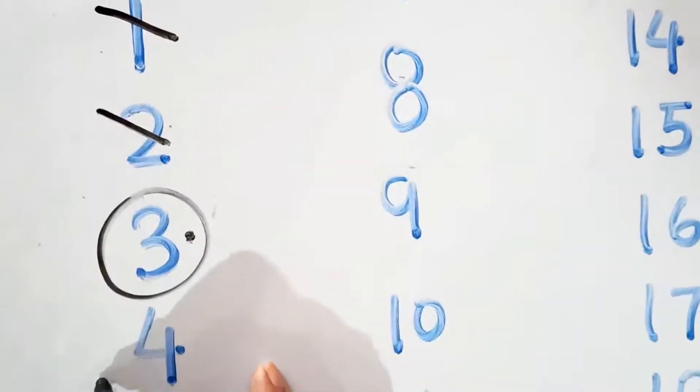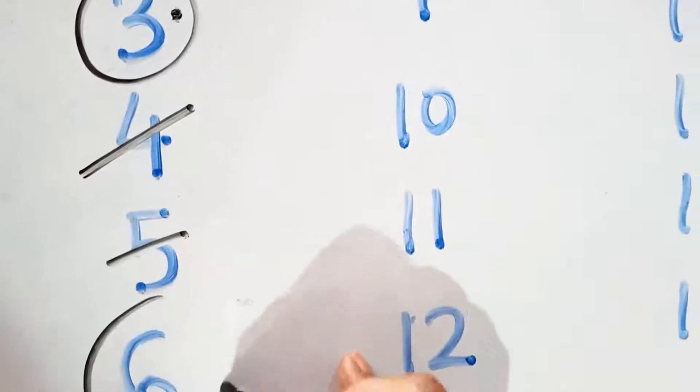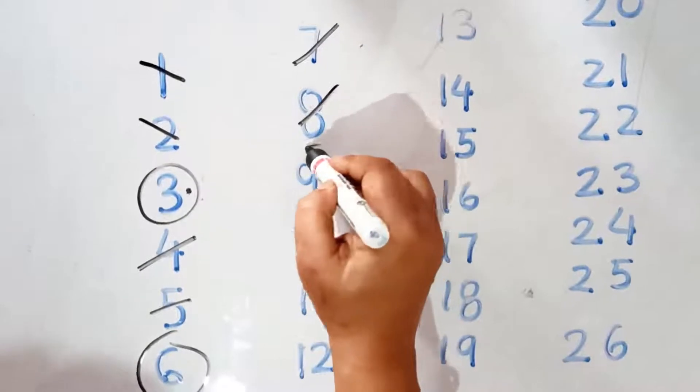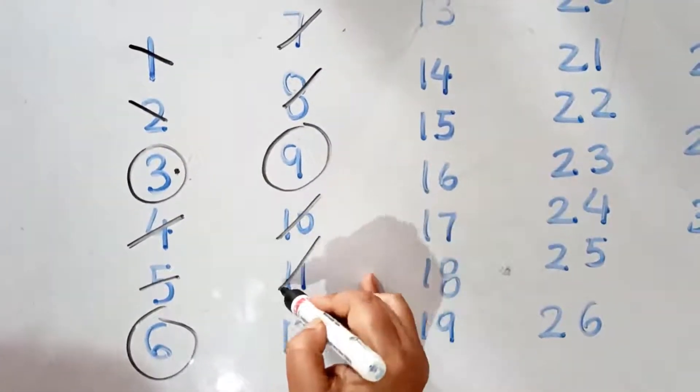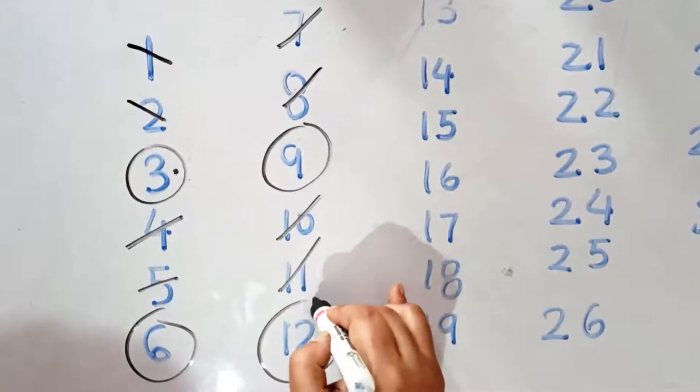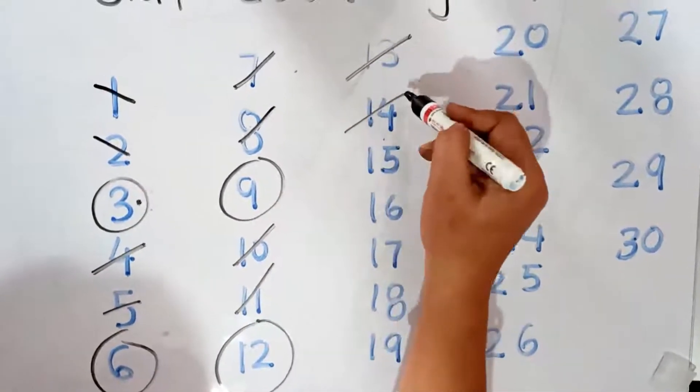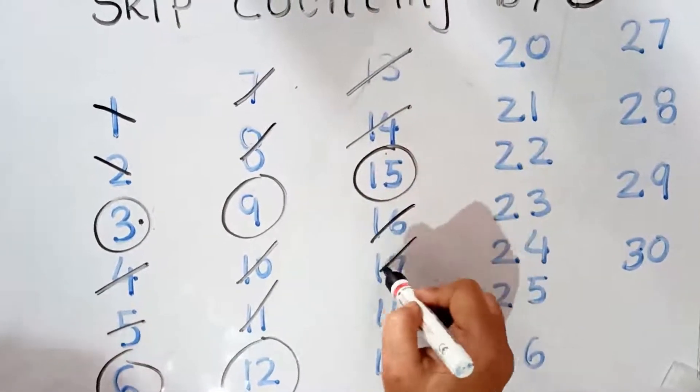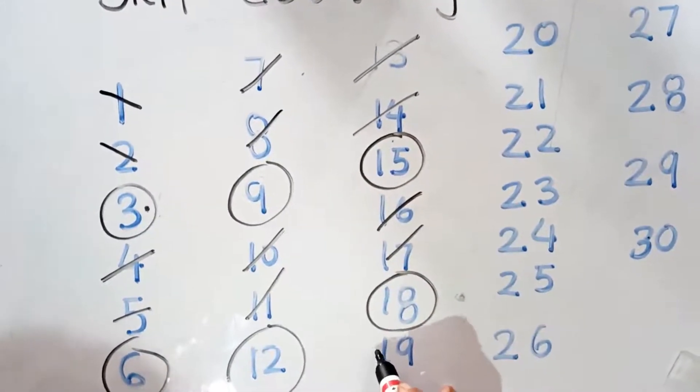Then we jump 4, 5 and go to 6. So, 3, 6. Now, 7, 8. Which number will come? 9. Then 10, 11. Which number will come? 12. Cut 13 and 14. Which number will come? 15. Cut 16, 17. We get 18. Same way, 19, 20. Which number will come? 21.